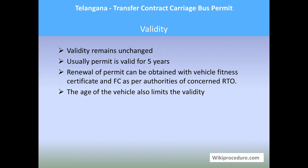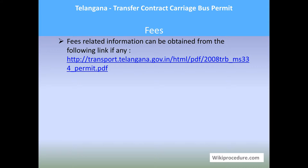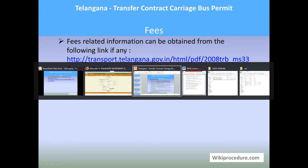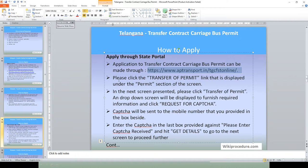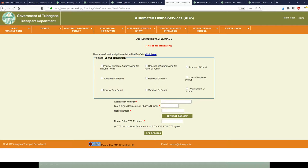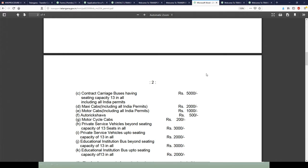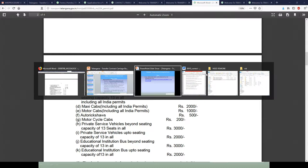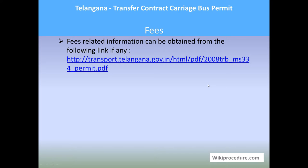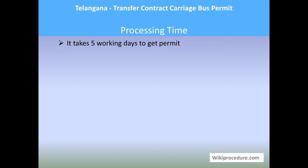Eligibility: the legal heir is eligible for transfer of permit. Validity remains unchanged — usually the permit is valid for five years. Renewal can be obtained with a vehicle fitness certificate as per the concerned RTO authorities, and the age of the vehicle also limits the validity. For fees, the link provided will help you reach the page where service-related information along with fee amounts is provided. Processing time is five working days to get the permit.